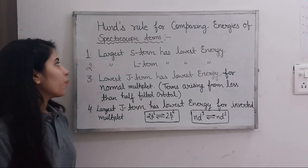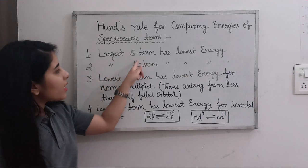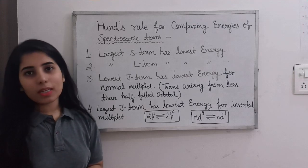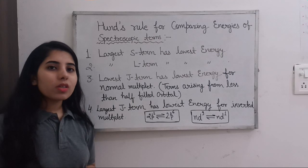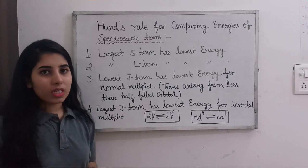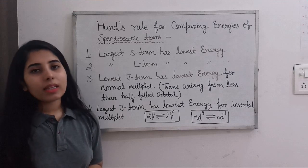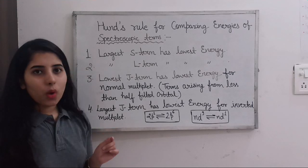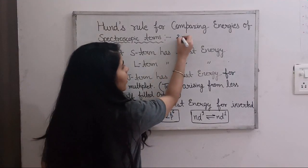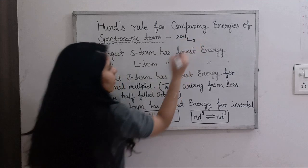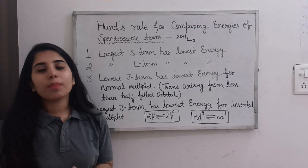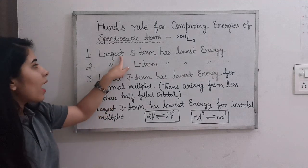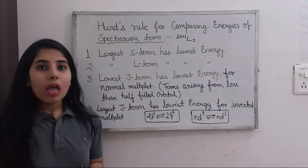First of all, I hope we are all familiar with how to write spectroscopic terms. The spectroscopic term notation is 2S+1 L J, where 2S+1 represents the multiplicity. Knowing this notation is important before we proceed to compare energies using Hund's rules.